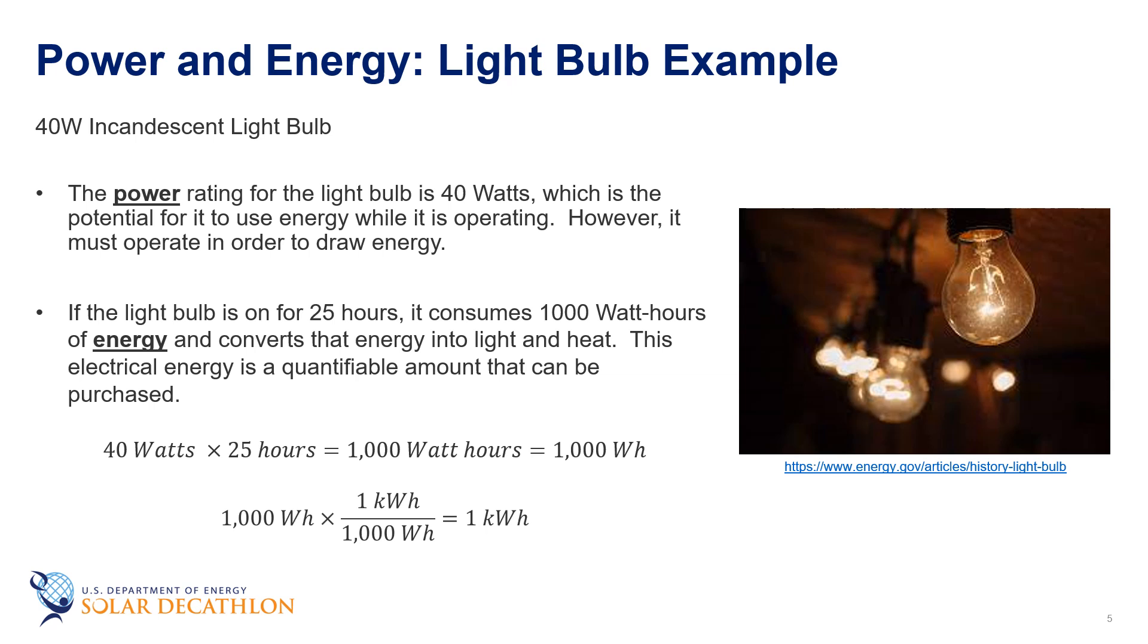As an example, let's look at a light bulb. I picked a 40 watt incandescent light bulb. This is a very typical kind of light bulb and it's an older style that you may still see in many lamps. The power rating for the light bulb is 40 watts, which is the rate at which it would use energy while it is operating. The power rating is often written on the end of the light bulb and is sometimes written near the base. But in order to actually use energy, it must operate for some amount of time. So if the bulb is on for 24 hours, we can take the 40 watts and multiply it by 25 hours. Numerically, 40 times 25 gives us 1000.